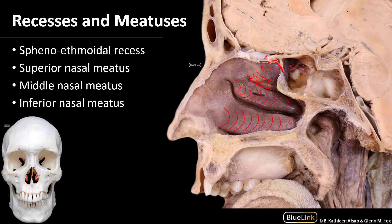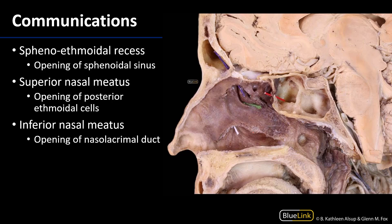The nasal cavity communicates with the paranasal sinuses — those hollow or cancellous spaces within the bones surrounding and forming the nasal cavity — and different meatuses and the recess communicate with these different cavities. In order to see these communications, we need to remove the conchae, or perform what would be known as a turbinectomy: the removal of a turbinate.